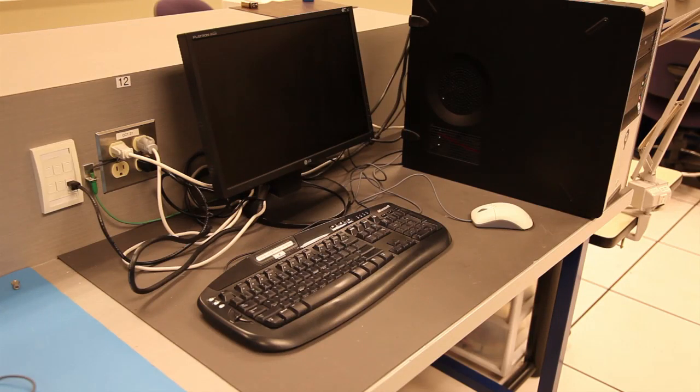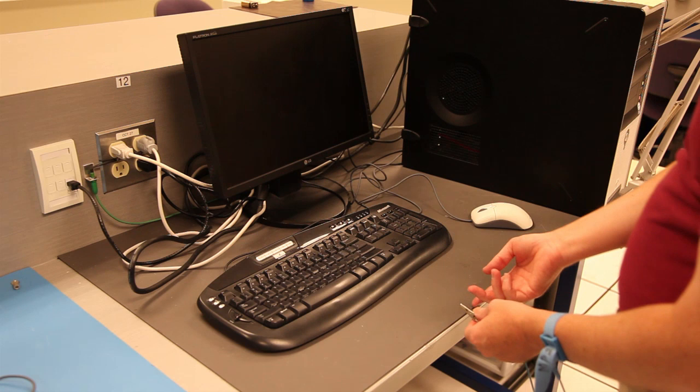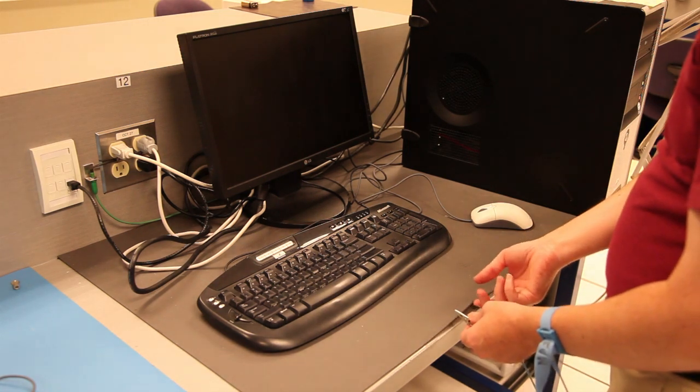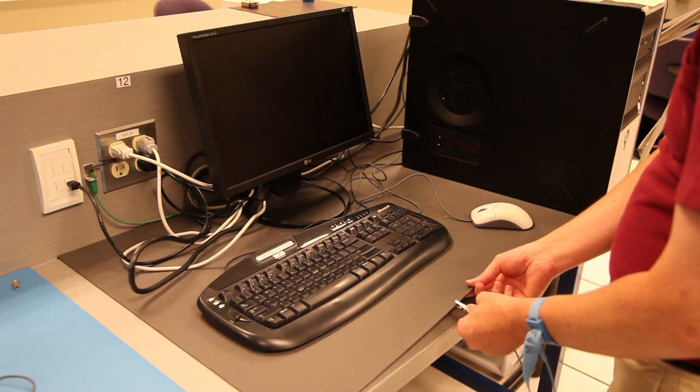There are three methods of connecting your antistatic wrist strap to ground. First is to connect onto the case of the computer itself. The second is to clip onto the lug at the back of the antistatic mat. The third is to simply clip onto the antistatic mat at the front. I prefer this method because it gives you more length on your cable.